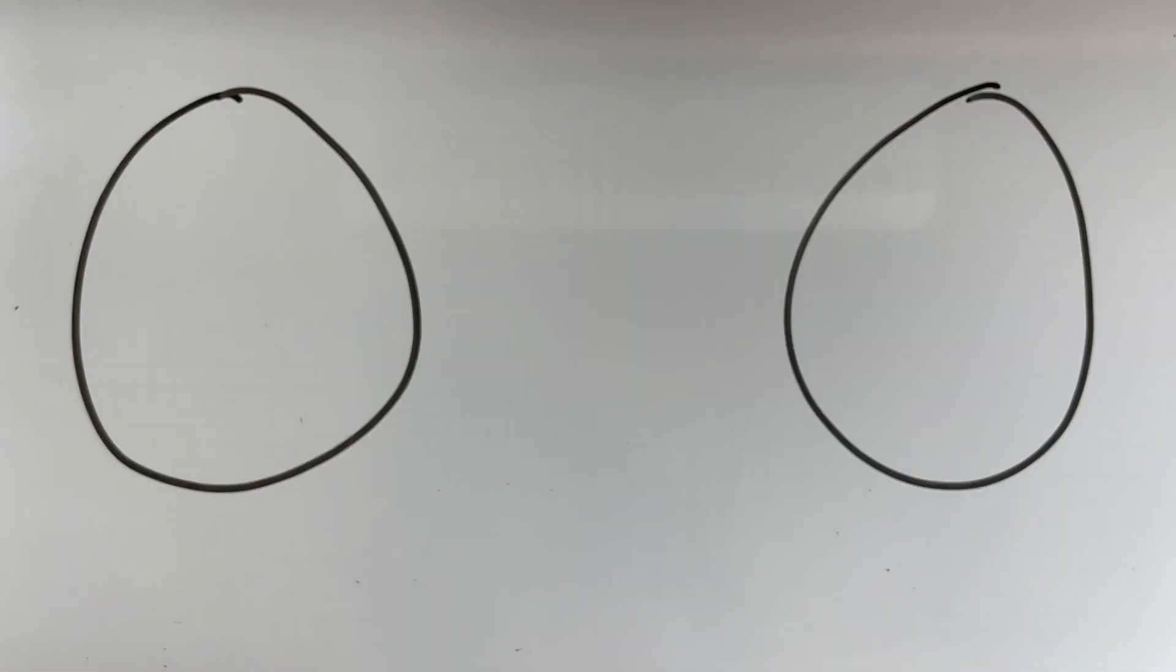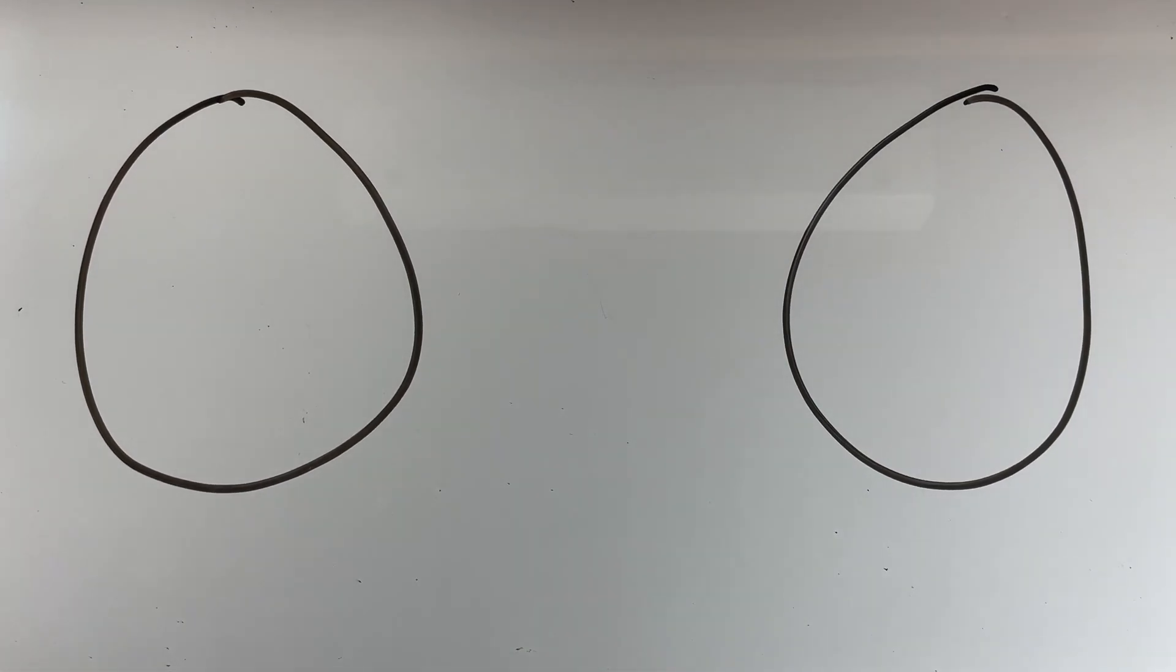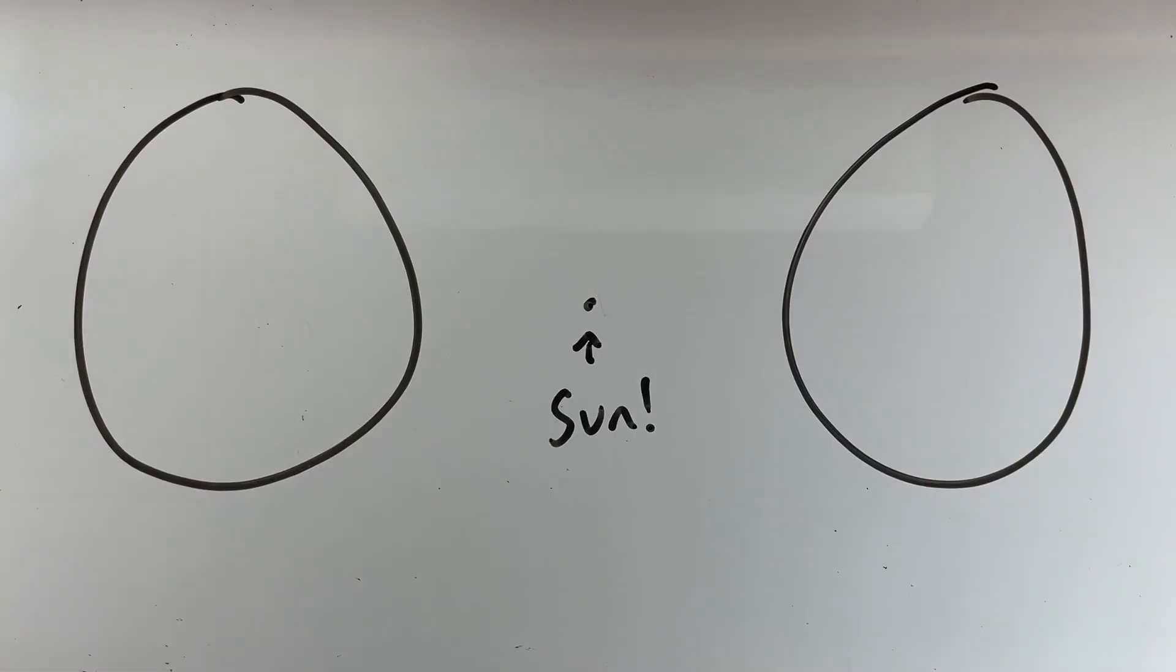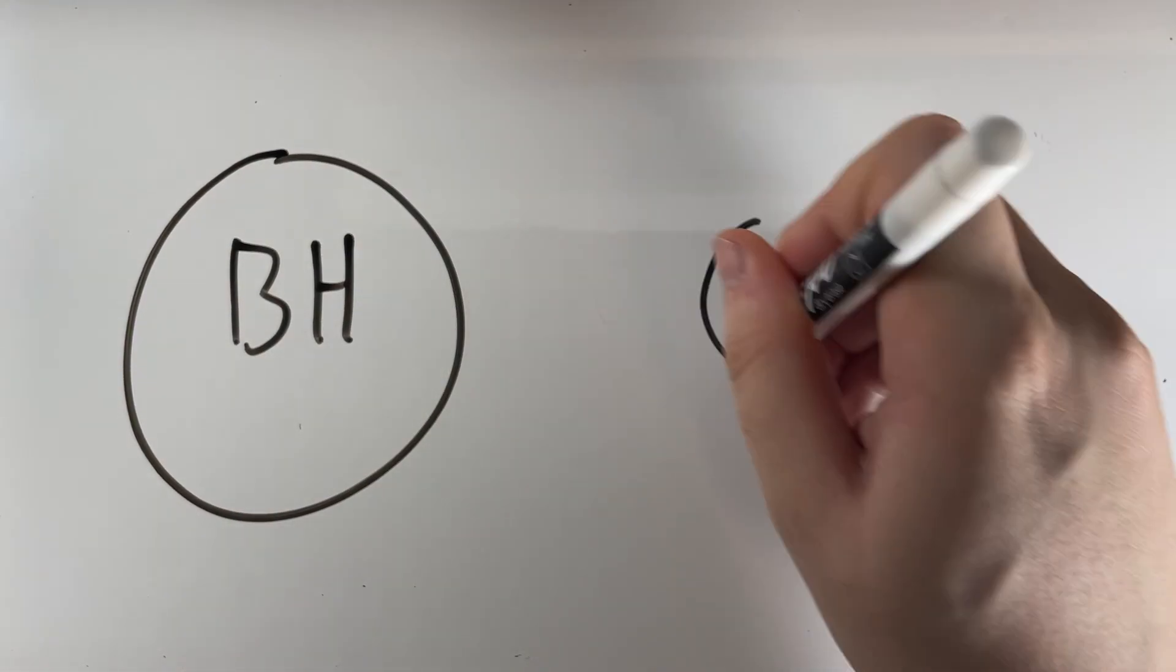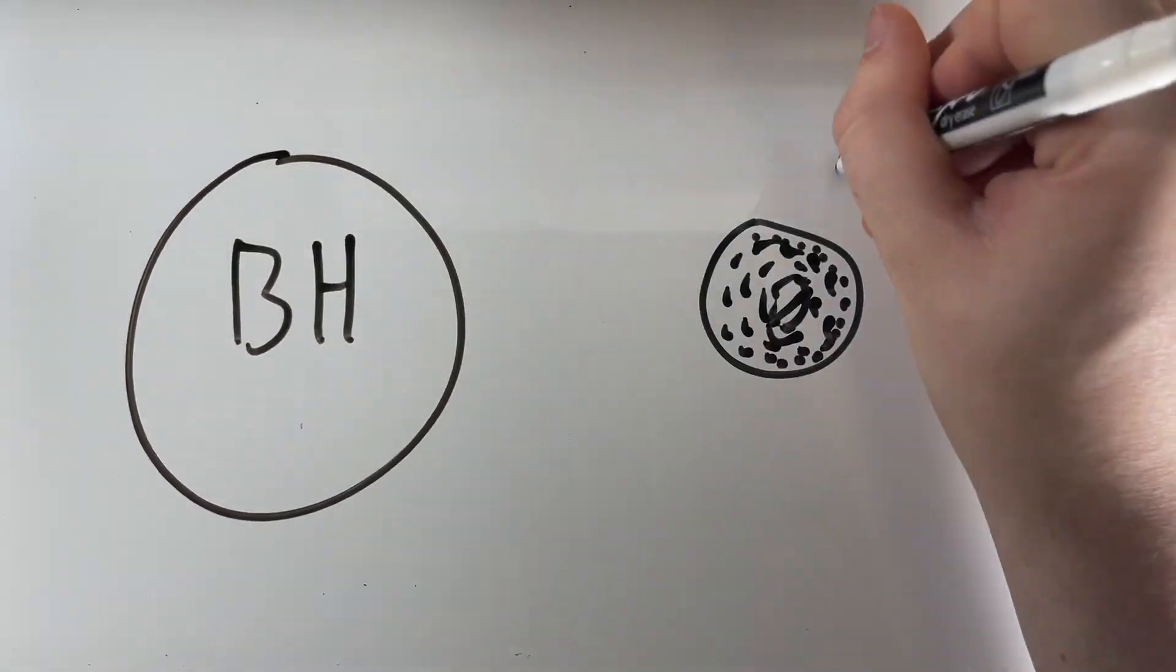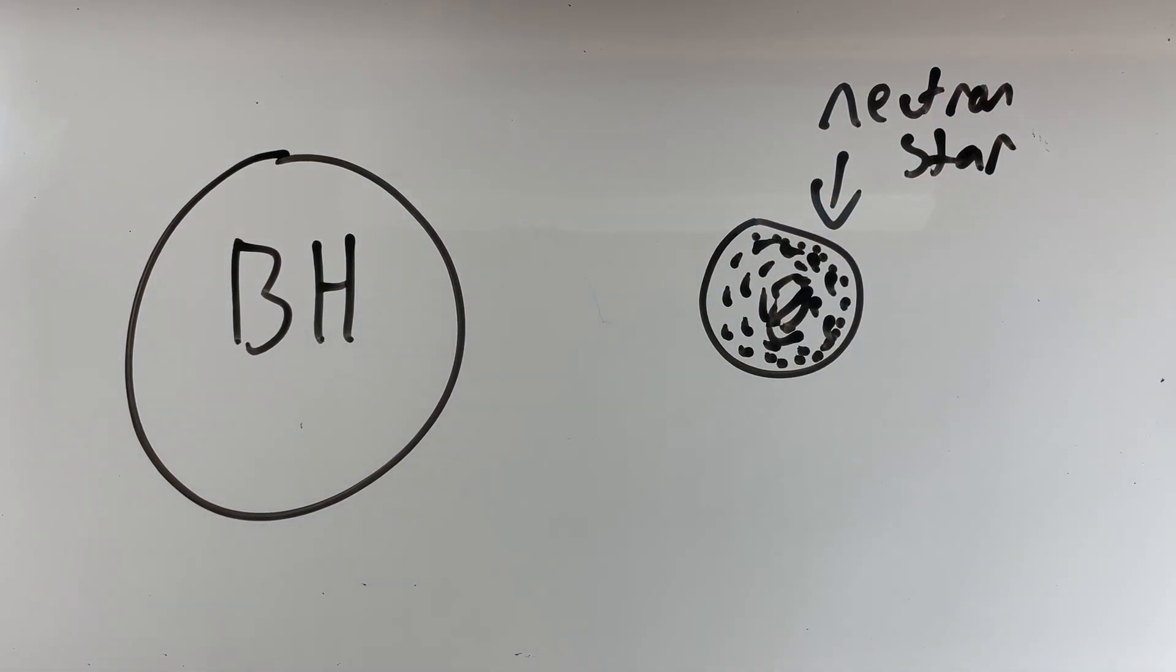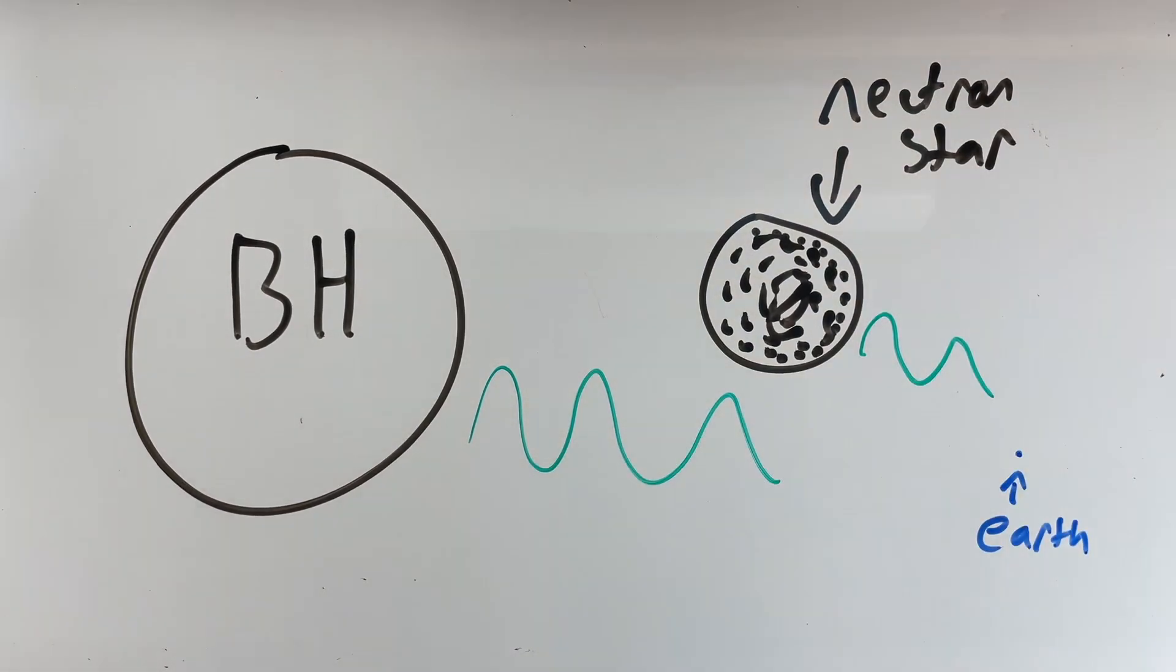And in contrast, the merging black holes that produced that tiny wave of gravitational energy were each around 30 times the mass of our Sun. So, only the most massive objects, like black holes or super dense collections of neutrons called neutron stars, have even the chance to radiate energy all the way out to our tiny planet.